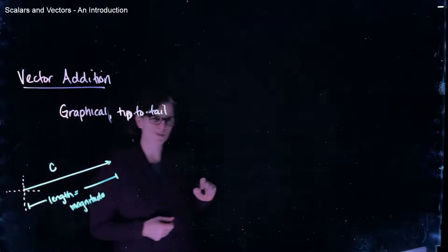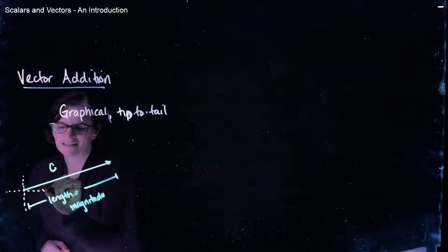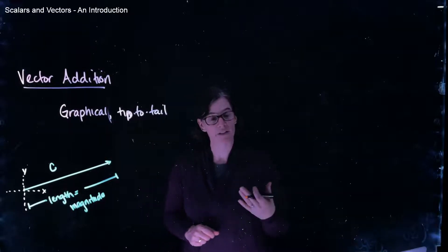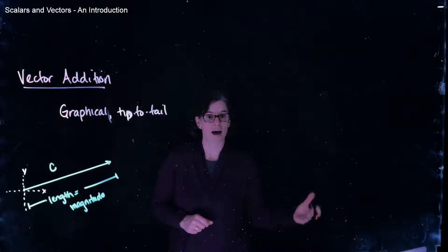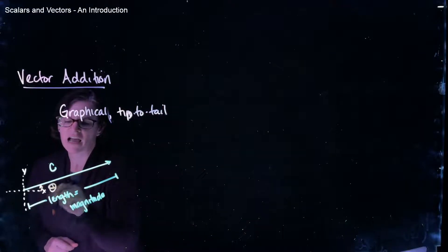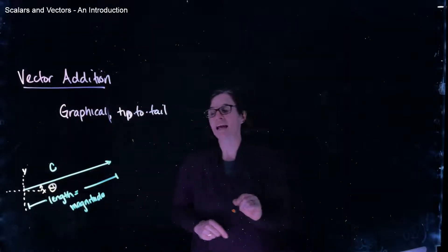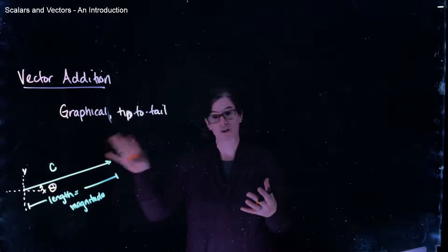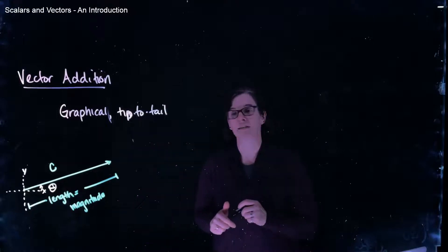Direction is also important in vectors, and when we think about the direction of a vector, we need to define the coordinate system in which the vector is living. We could use polar coordinates, but typically we will use the Cartesian coordinate system - the x, y, z coordinate system where those three planes are orthogonal to one another. The way I define the direction of a vector is relative to the positive x-axis, so I draw that angle with respect to the positive x-axis.